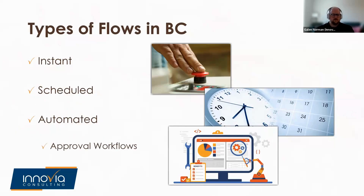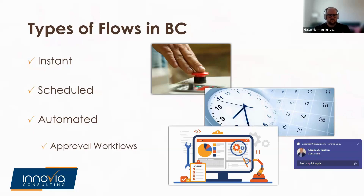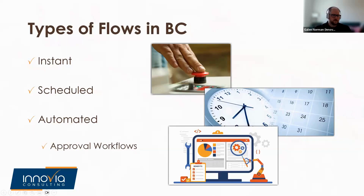Microsoft includes approval workflows under the automated umbrella, but because you have to click a button, I personally group them more with instant than automated. The most significant difference between a regular instant flow and an approval workflow is that an approval workflow button already exists in Business Central, whereas creating a new instant flow creates a new standalone button. You'll see this difference in the demonstration.